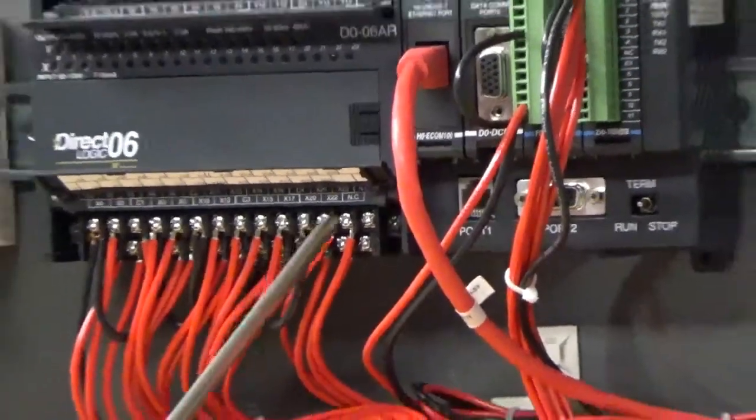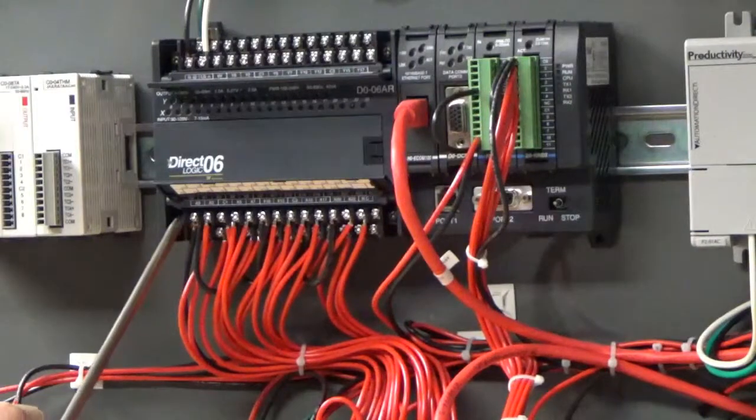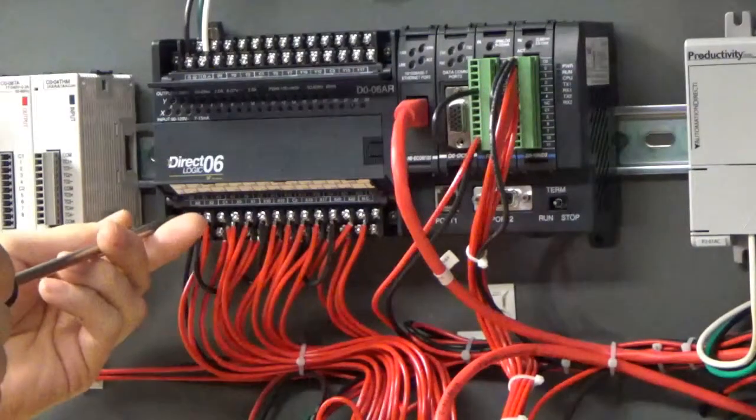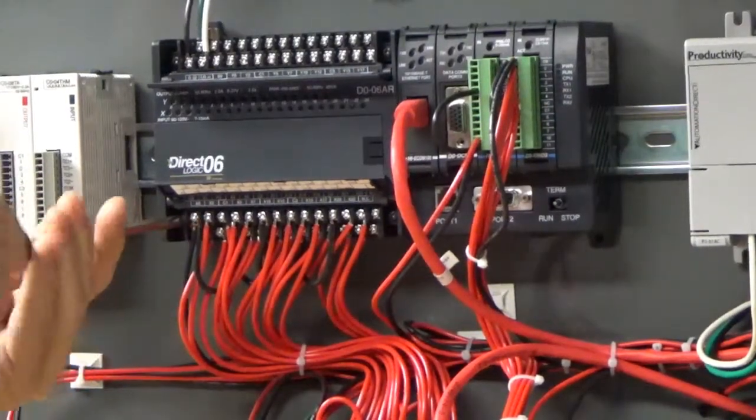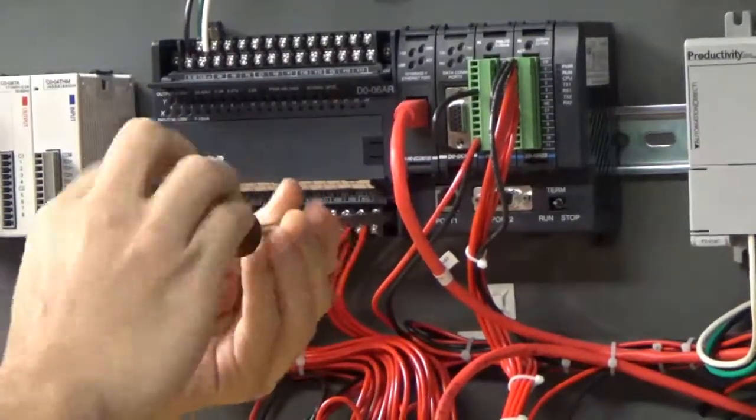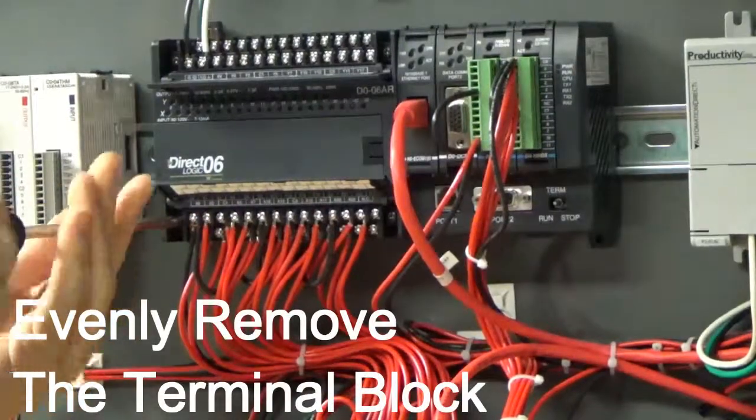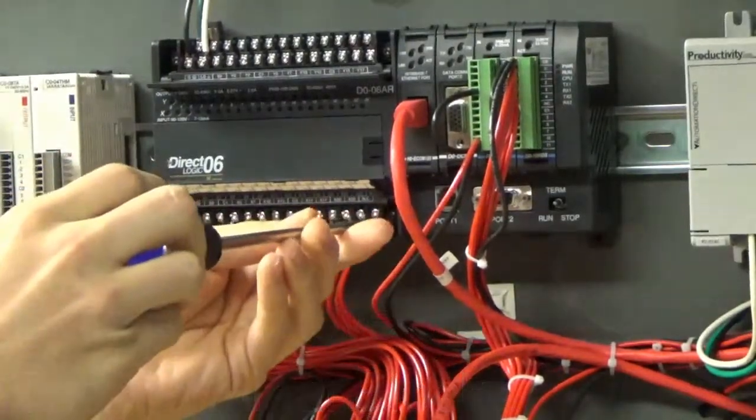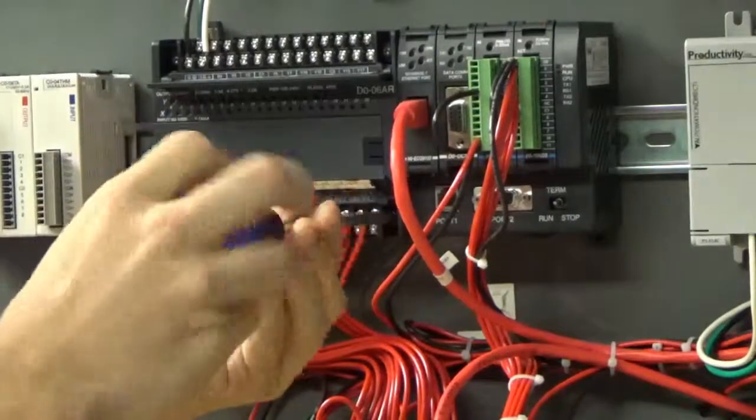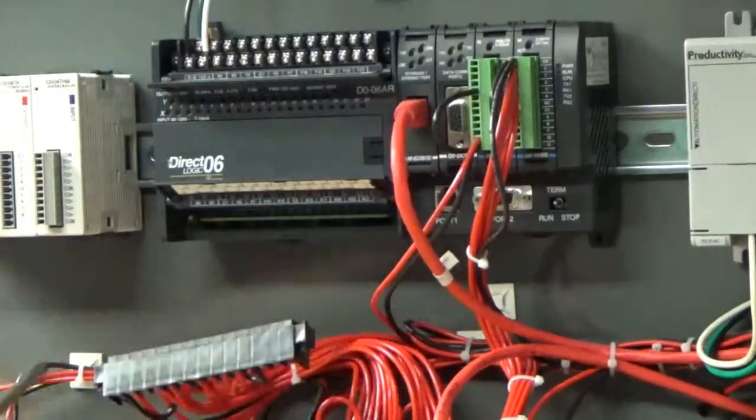On each side of the terminal strip, you'll see some black Phillips screws here and here. We're going to start removing those. Now I like to unscrew it about halfway on each side first to ensure we get a nice even removal of the terminal block. And it'll just pull out.